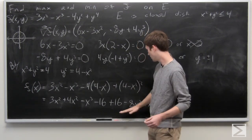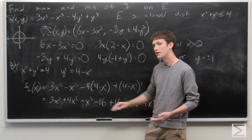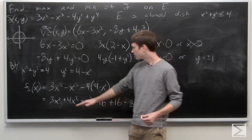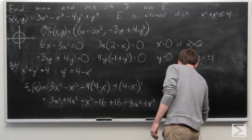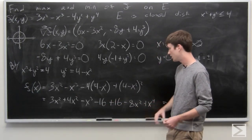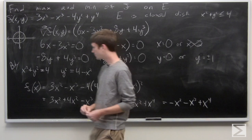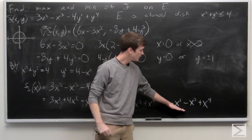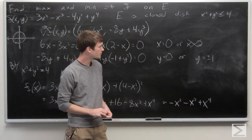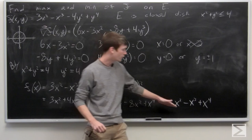Simplifying, we combine: 3x squared plus 4x squared minus 8x squared gives negative x squared; the only cubic term is minus x cubed; the constant terms negative 16 plus 16 cancel to zero; and we have plus x to the fourth. So the boundary function is f(x) equals negative x squared minus x cubed plus x to the fourth.